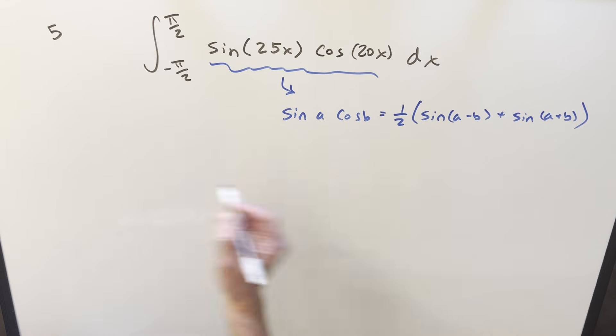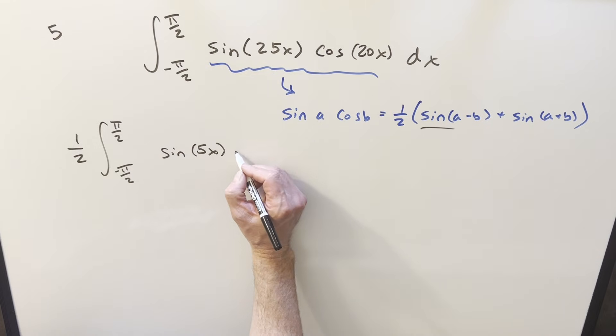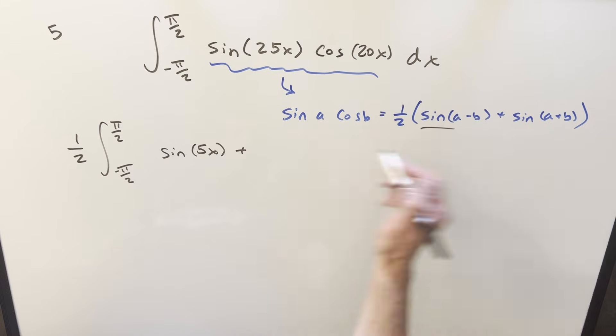So with the one half, let's bring that up front on this. And then for this first part here, the difference of the angles, it's just going to be sine 5x. Then for the next part, the sum of the angles, that's going to be sine 45x.